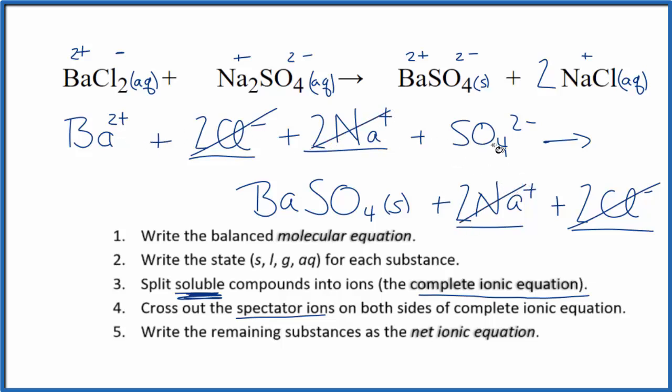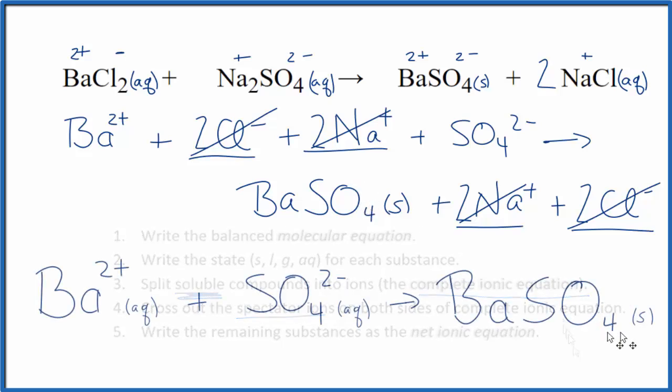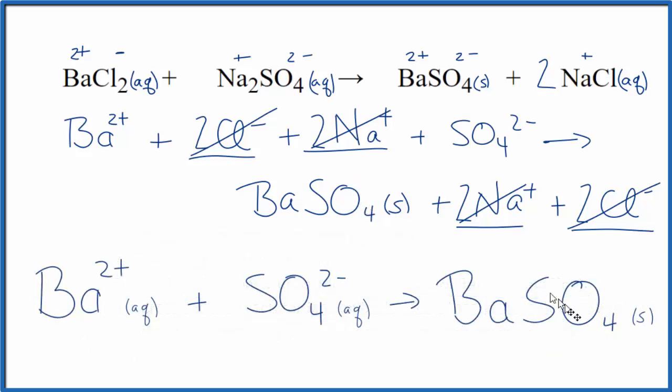What we're interested in is what changed. The barium ion, the sulfate ion, reacting to form the solid barium sulfate. So this is the net ionic equation. Let's clean this up a little bit. And this is the balanced net ionic equation for BaCl2 plus Na2SO4, barium chloride plus sodium sulfate. And this is Dr. B.